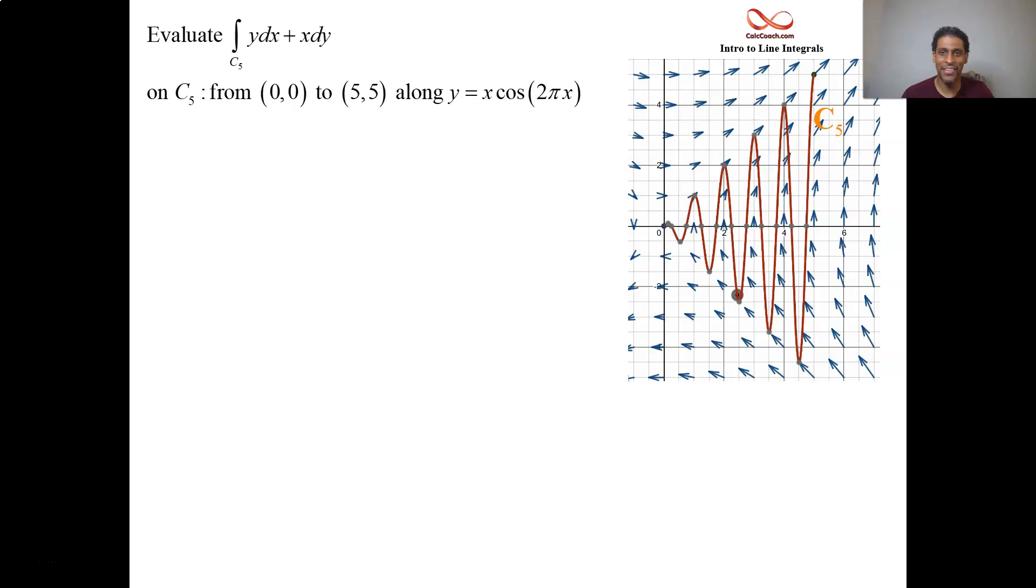We'll call this path C5, and whenever you know the y equals f of x version of the path, then what you do to parameterize is you let x be t and then y is that f of t. Then t does whatever x does. x goes from 0 to 5 along this wacky path, but at the end x starts at 0 and x ends at 5, so t should start at 0 and t should end at 5. When t is 0 you're at the origin, and when t is 5 you're at the point 5, 5. So then we put those into a vector, call that vector r of t. Step one is done.